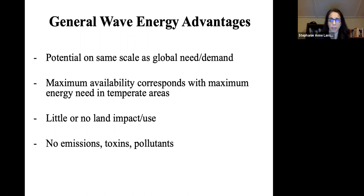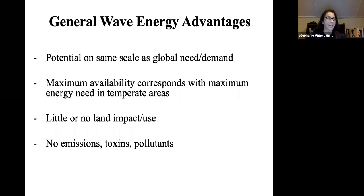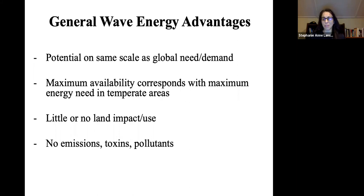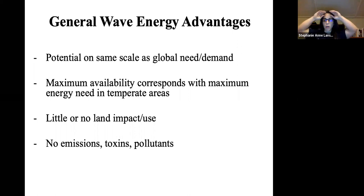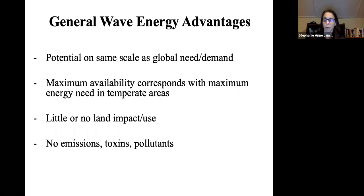Wave energy advantages include a potential on the same scale as global demand — meaning waves theoretically carry enough energy to meet global needs if it were economically feasible to capture it. Maximum availability is in the temperate zones of Europe, the US, and the northern and southern hemispheres, where economic activity and energy use are concentrated. There is little to no land use or impact, and no emissions or toxins — we're just moving water and air through turbines.